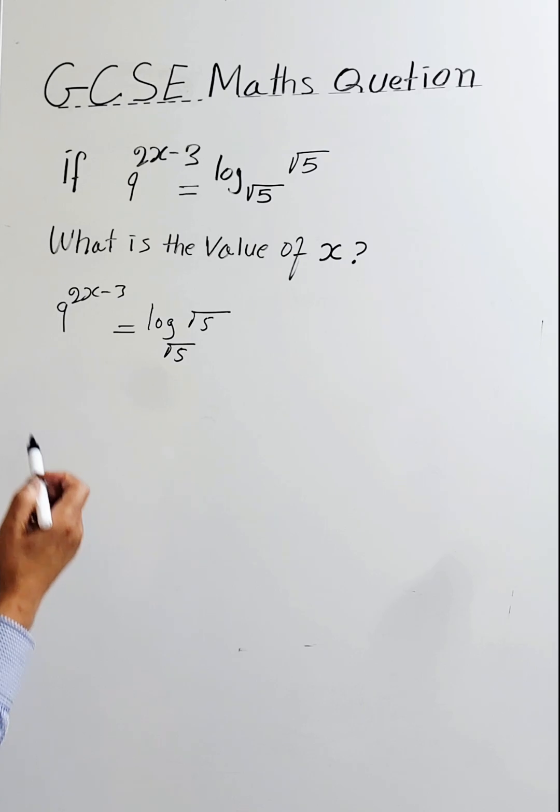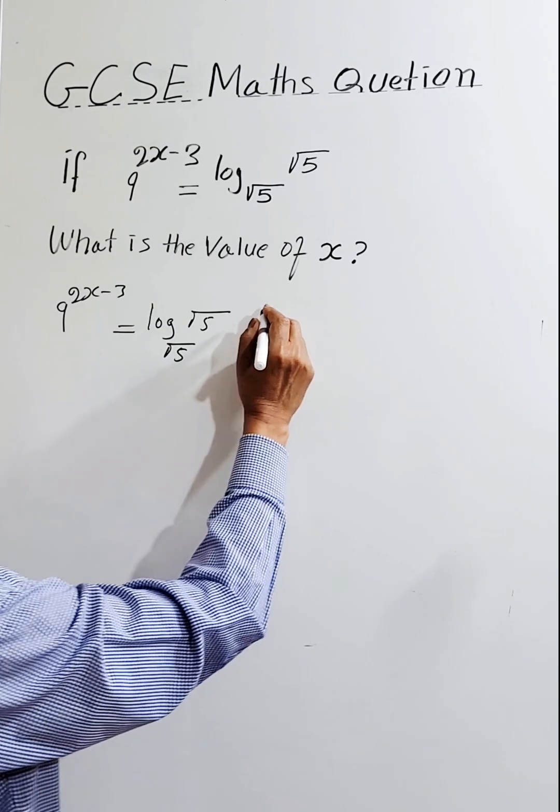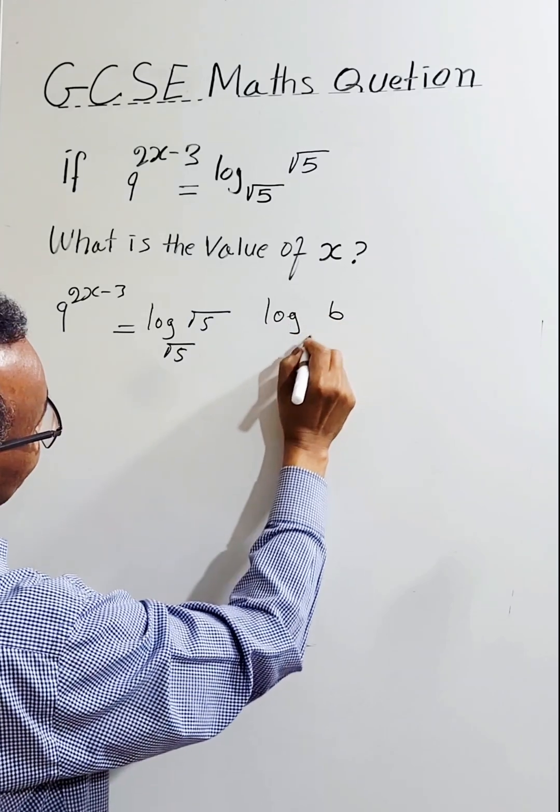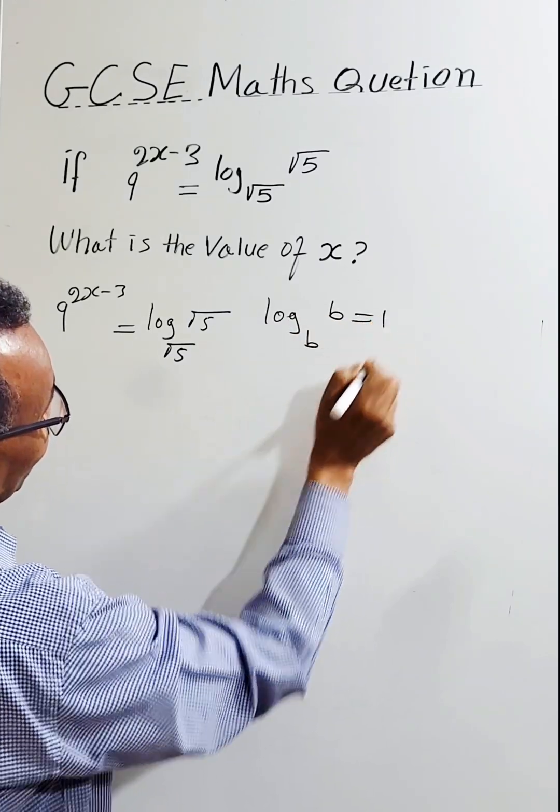In logarithms, if the base and the argument are the same, the result is 1. For example, log b base b, the result is 1.